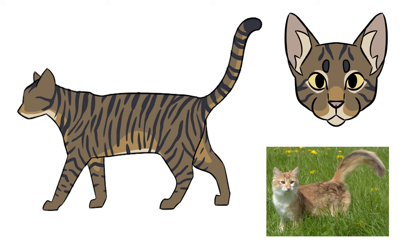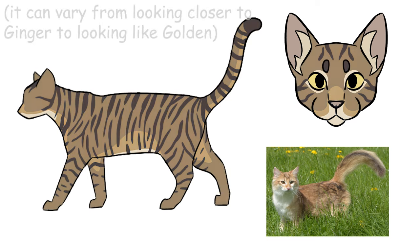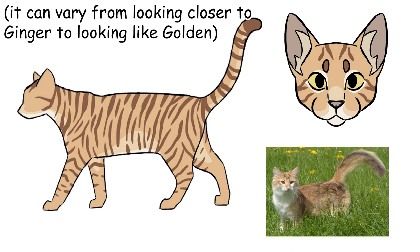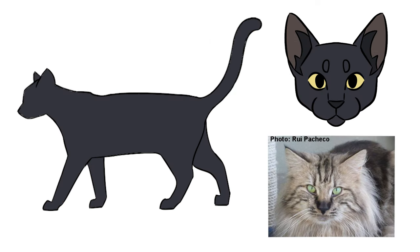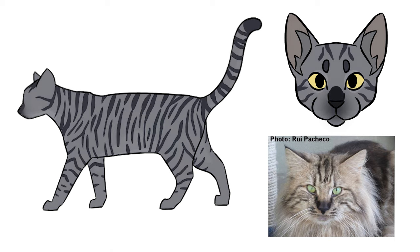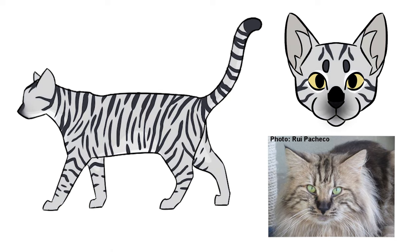Black-based cats homozygous for amber will be born their normal black-based colors. As they grow up, their eumelanin will be gradually replaced by pheomelanin, turning the cat orange. Their leathers, noses and paw pads, stay eumelanin-based. That's what happens to tabbies, anyway. For solid slash self-black cats, amber works more like inhibitor in that it makes a silver tabby, but it keeps their leathers and the bridge of their noses black.